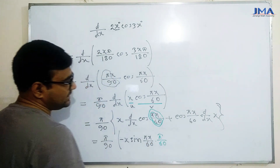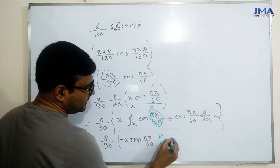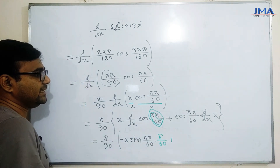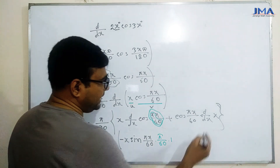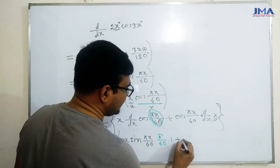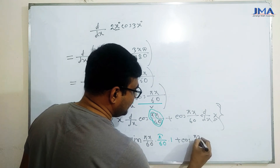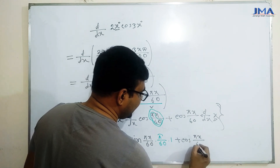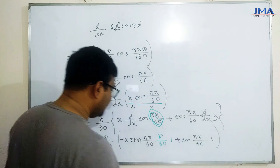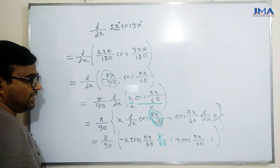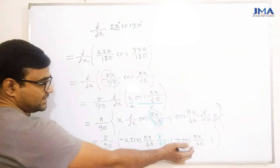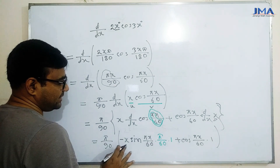pi by 60, और x का अंतरी करण करने पर 1 आएगा। आगे जब अंतरी करण होगा तो constant 1 हो जाएगा, plus दूसरी तरफ जो आता है — ताई pi x by 60 का अंतरी करण 1 हुआ। अब इसे देखो — यह लिखते हैं।